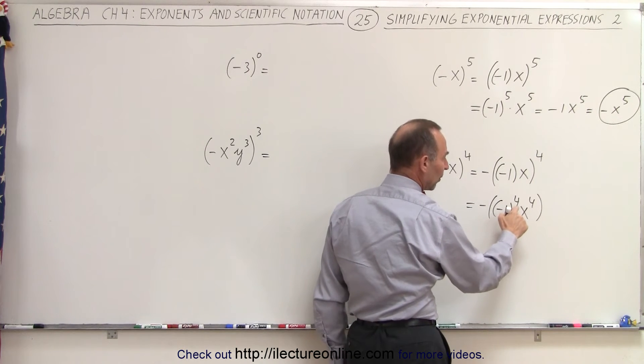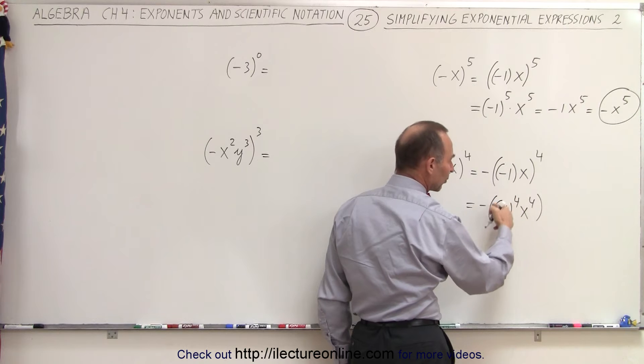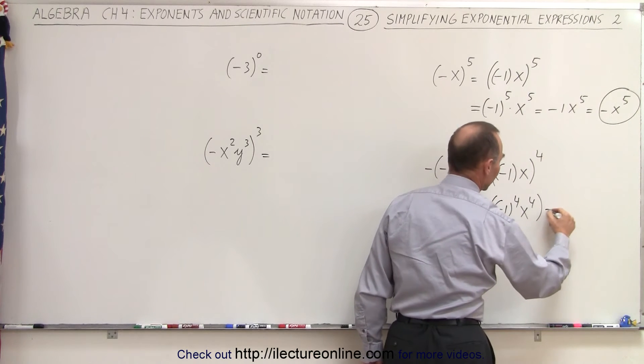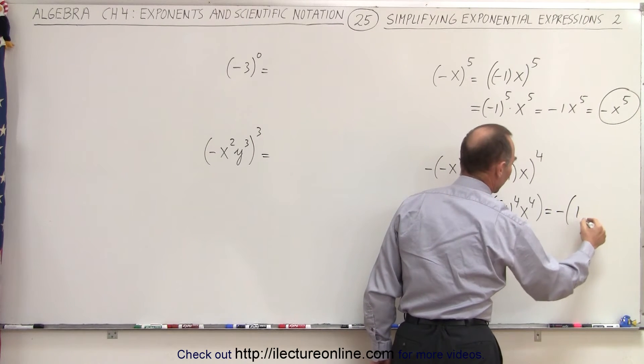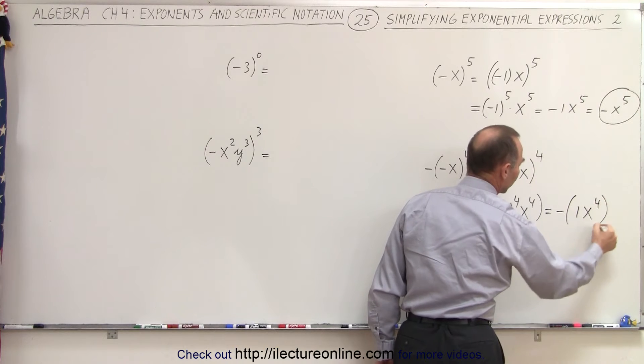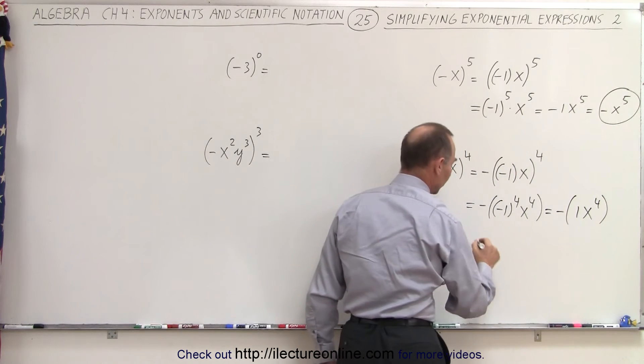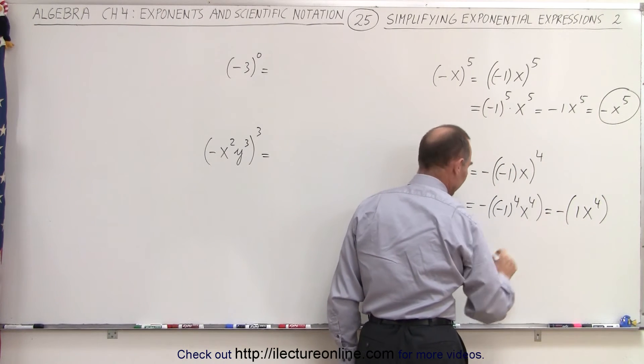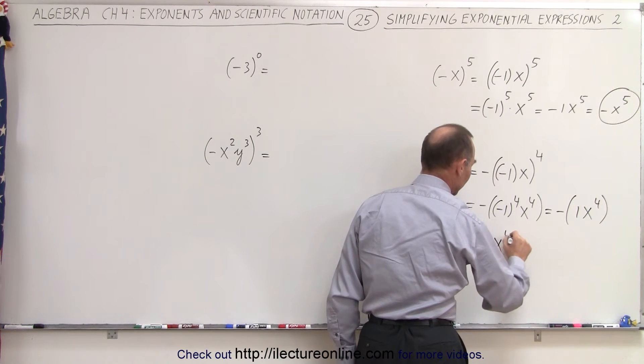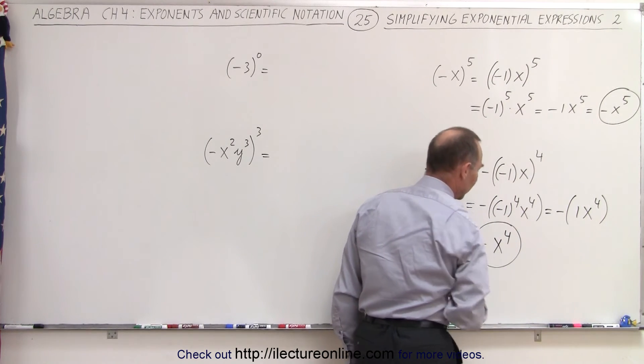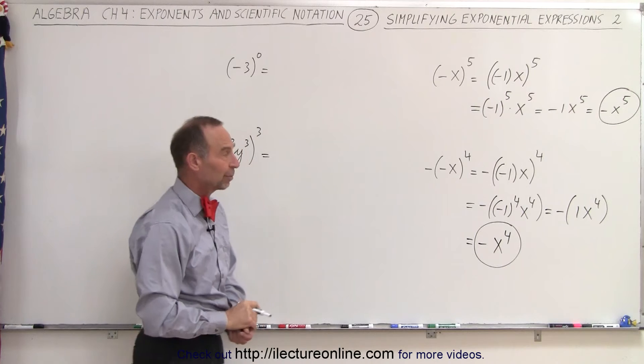Negative 1 raised to an even exponent becomes a positive 1. So this is equal to negative, positive 1 times x to the fourth power. Of course, we don't need to write the 1 there. So this becomes simply, when we apply the negative in front, negative x to the fourth power. And this is the most simplified form of that expression.